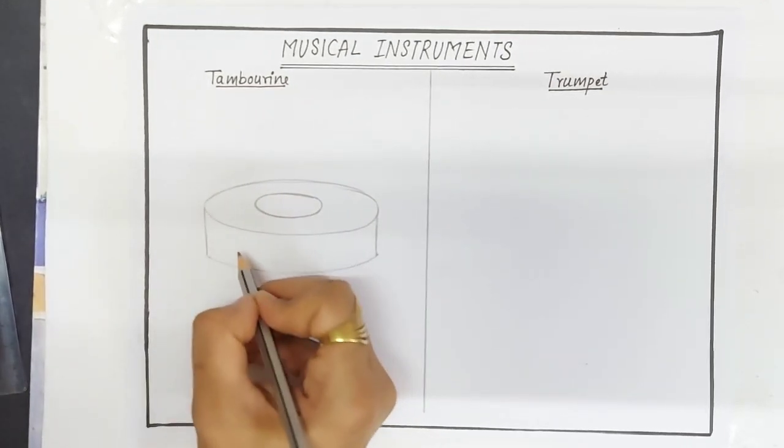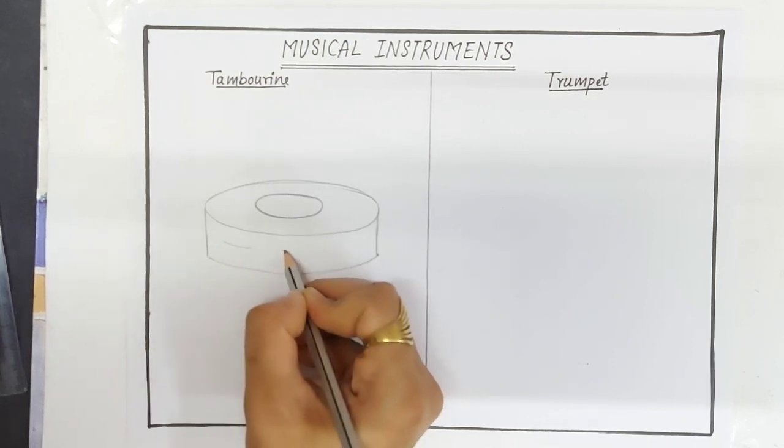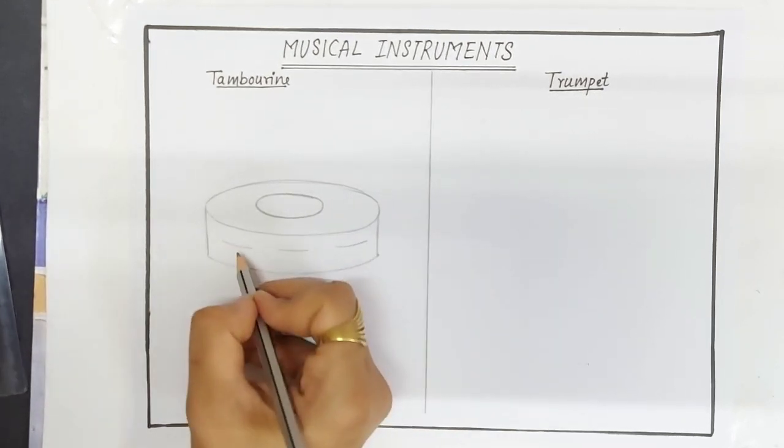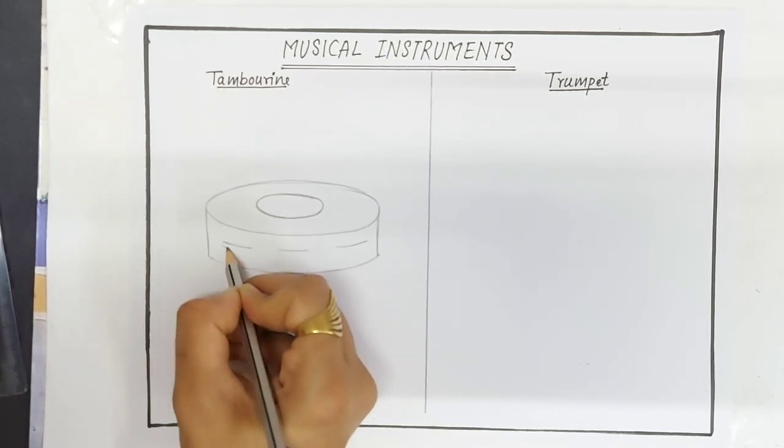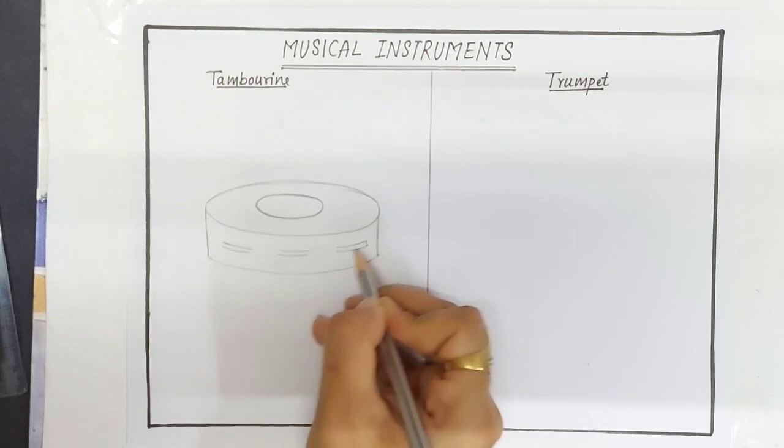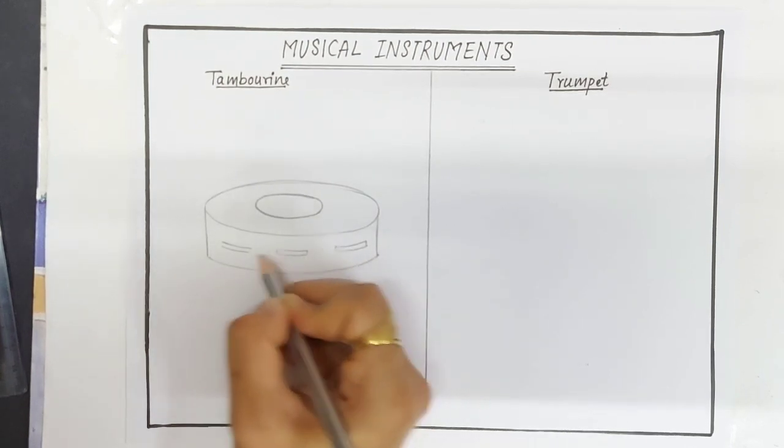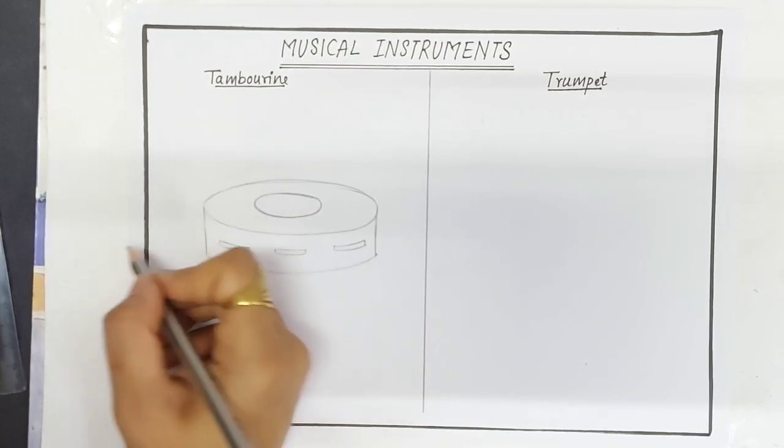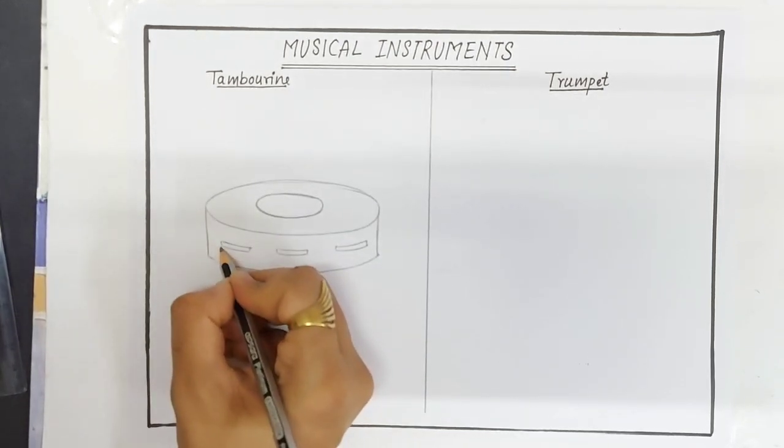Draw three small curved lines like this. One, two and three. Draw parallel lines to these lines. And join these lines like this. Again you have to draw a U-shaped curved line like this.